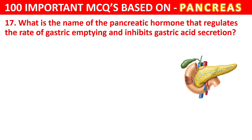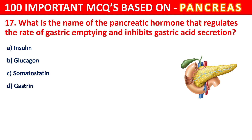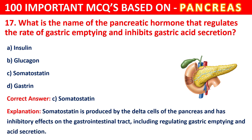Question 17. What is the name of the pancreatic hormone that regulates the rate of gastric emptying and inhibits gastric acid secretion? Your options are Insulin, Glucagon, Somatostatin, or Gastrin. The correct answer is C, that is Somatostatin. Somatostatin is produced by the Delta cells of the pancreas and has inhibitory effects on the gastrointestinal tract, including regulating gastric emptying and acid secretion.